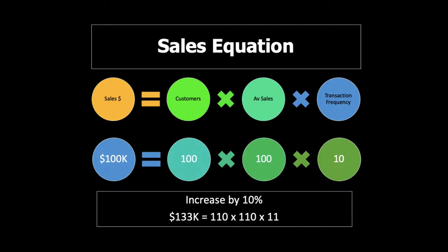The sales equation is another important concept that lots of people overlook. Sales is a function of the number of customers you have, multiplied by the average sale per transaction, multiplied by the number of transactions per customer per year. In the example: if we had 100 customers, each spending $100 per transaction, doing 10 transactions per year, we'd have a business of $100,000. If we increase each of those by 10%, our sales don't go up by 10% — they go up by 33%.